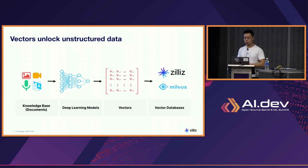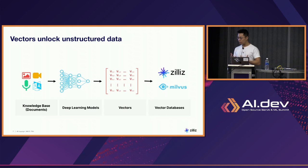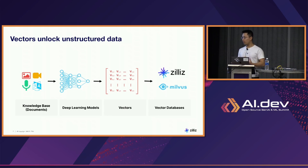The way we typically do it is: you have a knowledge base, or an internal set of images, video, audio, or text — something that you want to index and understand. You use embedding models, deep learning models, to turn those into vectors, and then you can store them inside of a vector database. There are many other vector databases out there — we're obviously partial towards Zilliz Cloud and towards Milvus — but there are a variety of different ways to generate those embeddings and many ways to store them as well.